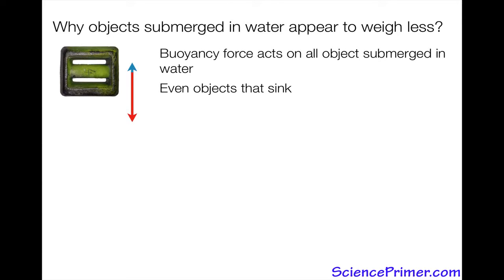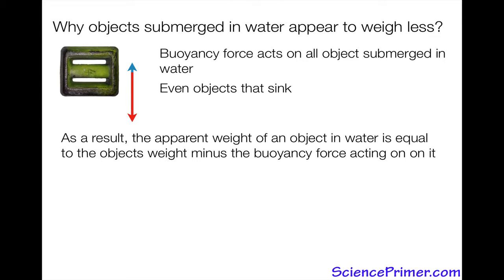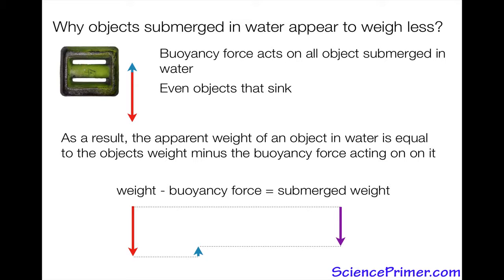So as a result, the apparent weight of an object in water is equal to the object's weight minus the buoyancy force acting on it. So even though the object is fully submerged and continues to sink, there is buoyancy force. And so the weight of the object, the red arrow, minus the buoyancy force, the blue arrow, will equal the submerged weight. So it will weigh a little bit less, and the amount less it will weigh is equal to the buoyancy force exerted on the object.